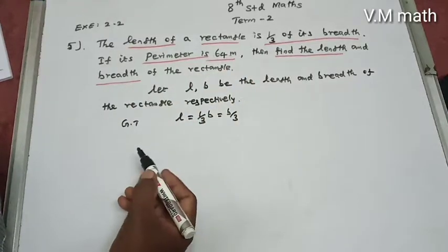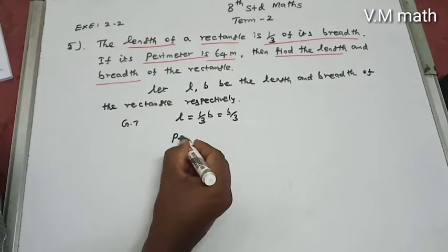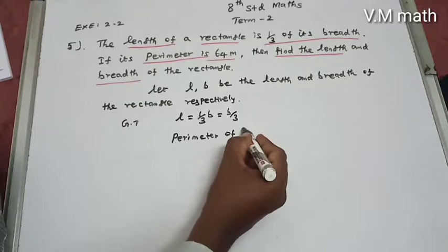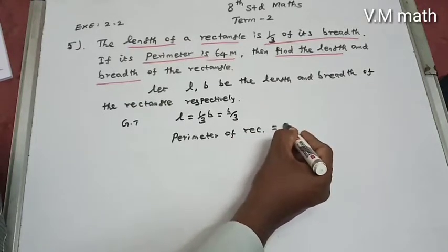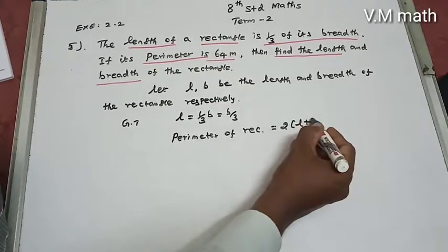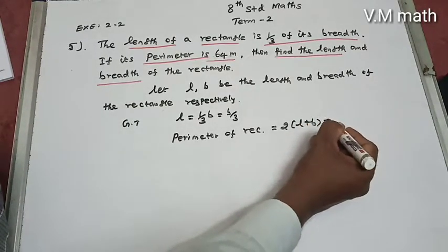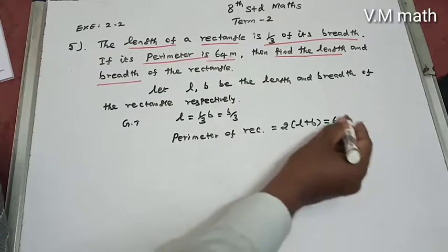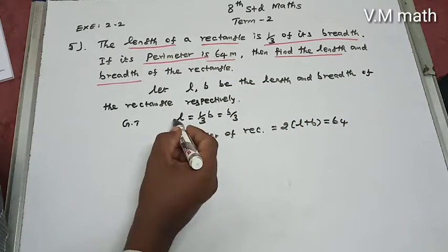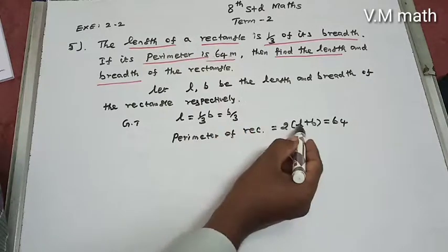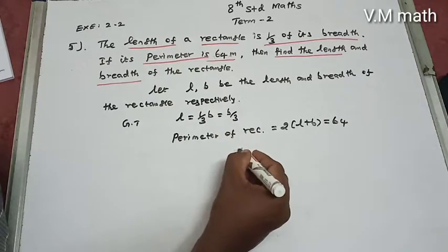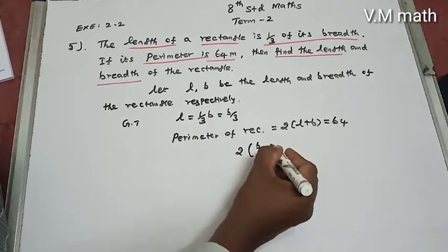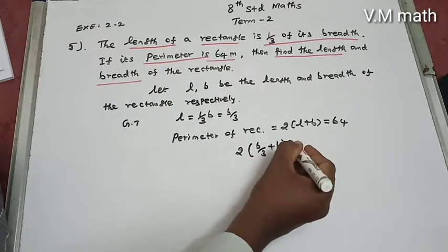Since the perimeter is 64 meters, the perimeter of a rectangle is equal to 2 into L plus B. This is the formula, and it is equal to 64 meters. Substituting L equals B by 3 into the equation gives us 2 into B by 3 plus B equals 64.